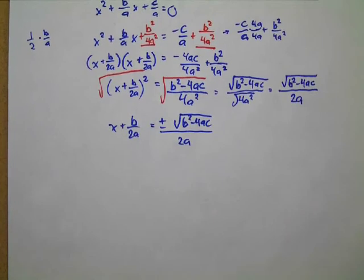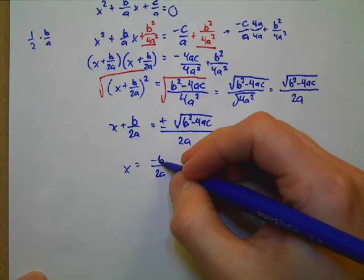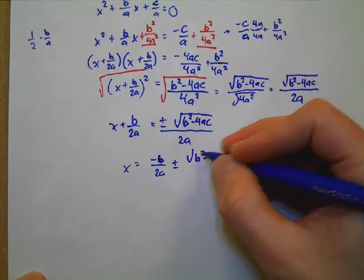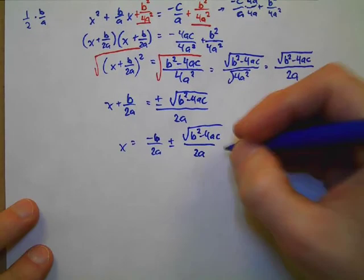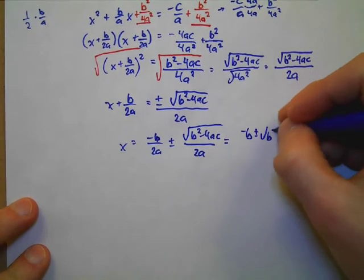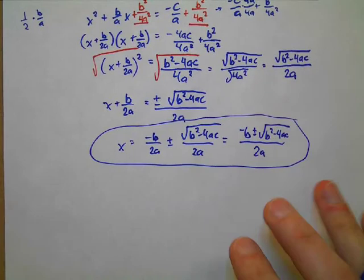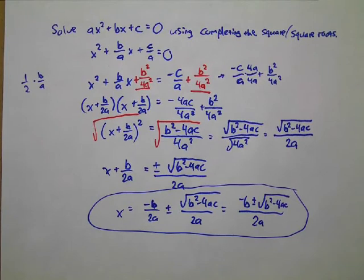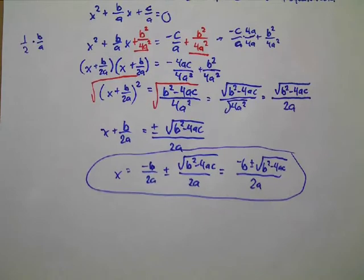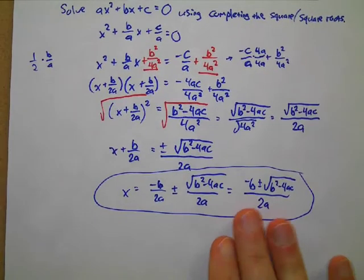To finish solving for x, I subtract the b/2a from both sides. And — oh my gosh — what do we have here? The quadratic formula! Amazing. There's our quadratic formula. That's the derivation of the quadratic formula right there. You derived it.